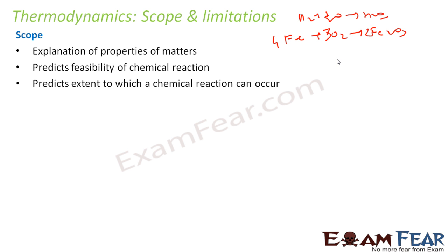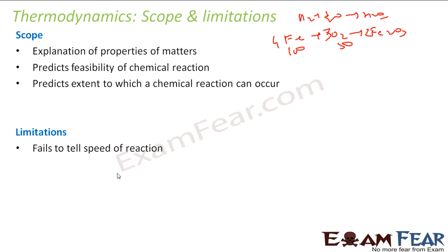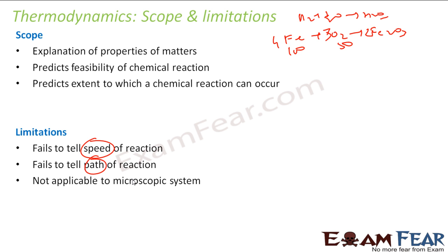It will also tell the extent to which a reaction can occur — for example, given 100 grams of one reactant and 50 grams of another, to what extent will the reaction happen? But there are some limitations: it will not tell the speed of the reaction. It will not tell the path of the reaction, because as I mentioned, it depends only on the initial and final state. And it is not applicable to the microscopic system — thermodynamics is applicable only at the macroscopic system level.